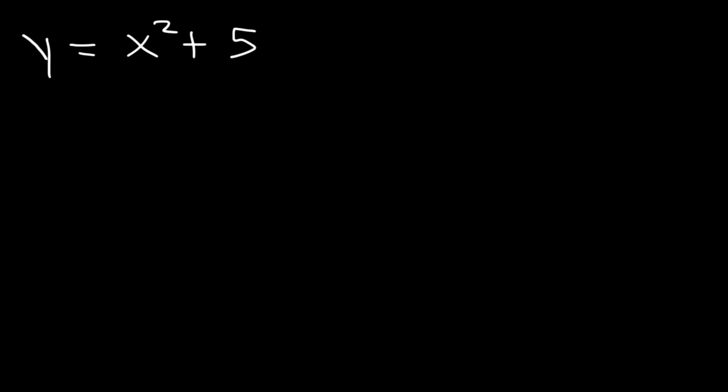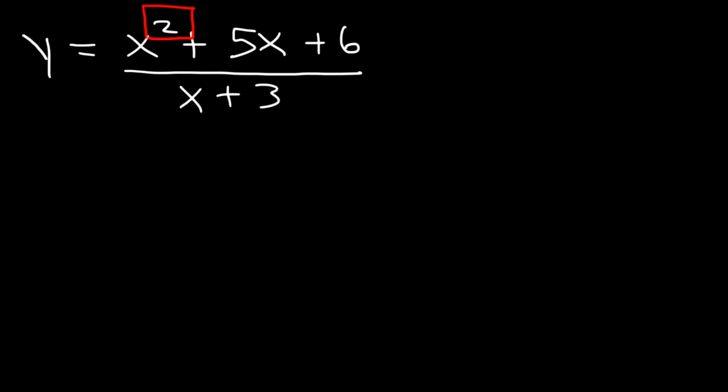Here's another problem: y equals x squared plus 5x plus 6 divided by x plus 3. The degree of the numerator is 2 and the degree of the denominator is 1, so it's top-heavy — there is no horizontal asymptote. But if the degree of the numerator exceeds the denominator by exactly 1, there is a slant or oblique asymptote. If it exceeds by more than 1, there is no slant asymptote either.